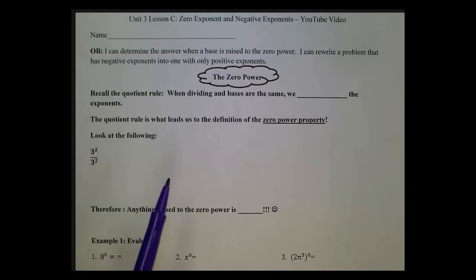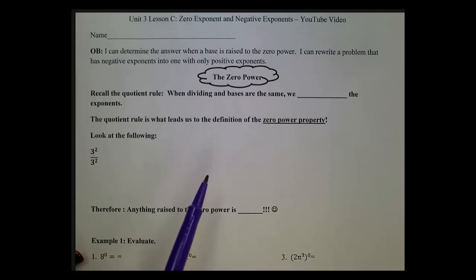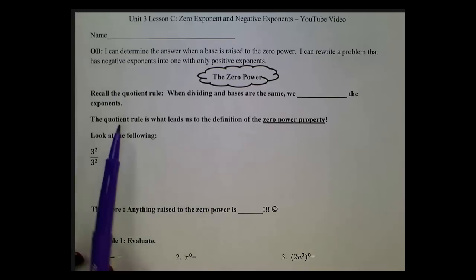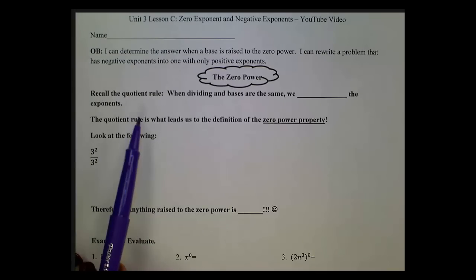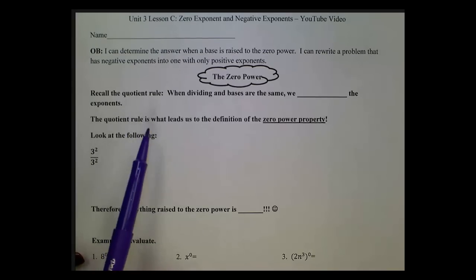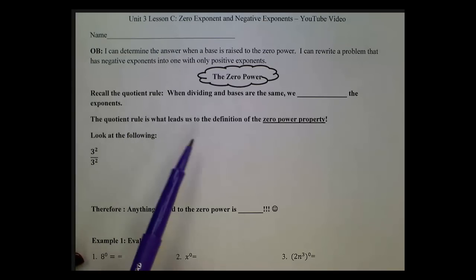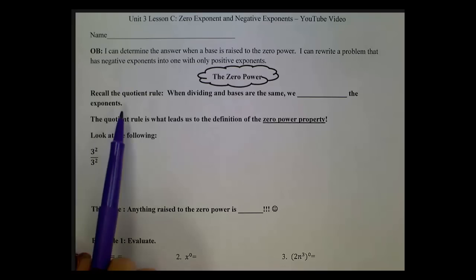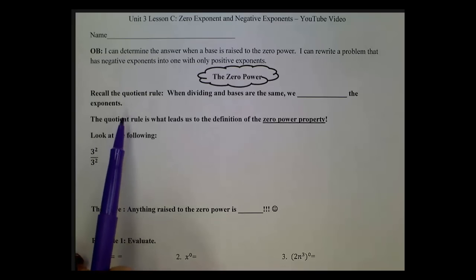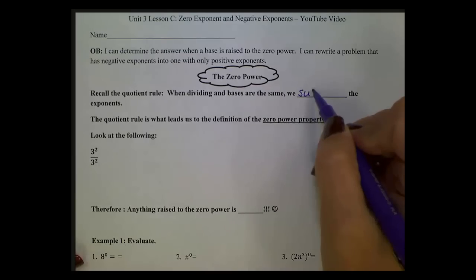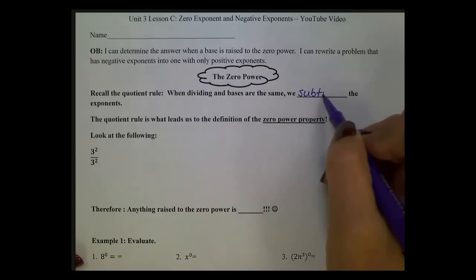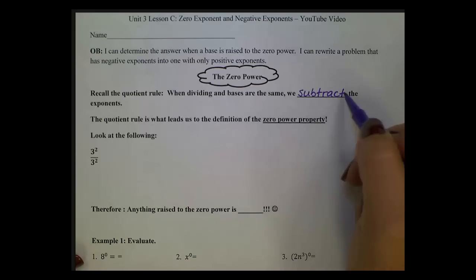Let's start with talking about the zero power. In lesson B, you learned about the quotient rule. Let's recall that because we're going to use that concept to help us understand where the zero power property comes from. When dividing and bases are the same, what do we do with the exponents? We would subtract the exponents.